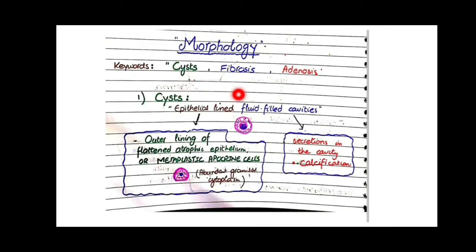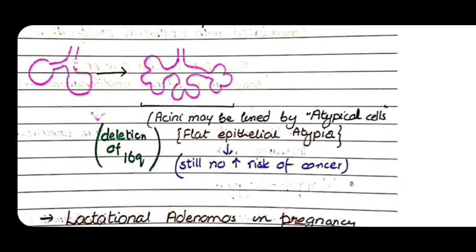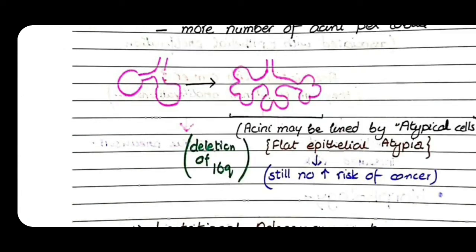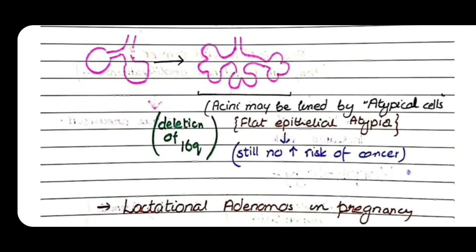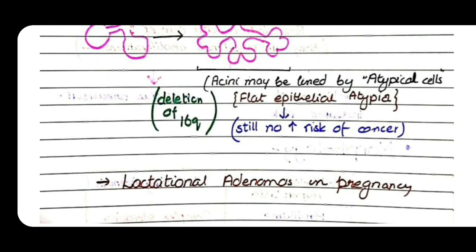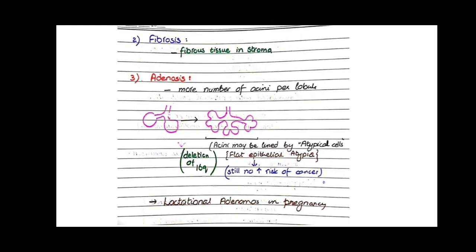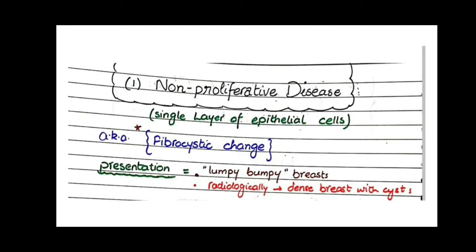Some additional points: the acini may sometimes be lined by atypical cells, constituting flat epithelial atypia, but in non-proliferative disease there is still no increased risk of cancer. The genetic basis of this morphological change is deletion of the 16q chromosome. Also, a rare lesion in pregnancy called lactational adenoma is an example of non-proliferative disease.